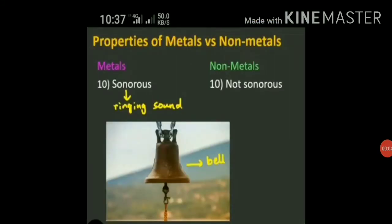Metals are sonorous, meaning they produce a ringing sound, while non-metals are non-sonorous. The property of producing a ringing sound when a metal strikes a hard material is called sonority. For example, when a peon strikes a bell with a hammer, the bell produces a ringing sound — that's why metals are used for making bells. Metal wires are also used in musical instruments because they are sonorous. Non-metals do not make a ringing sound when struck, so non-metals are non-sonorous.